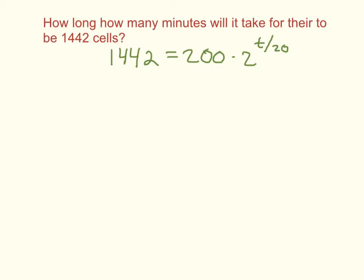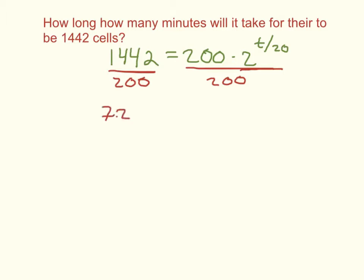Now we have the capability to answer this question without guessing and checking. We need to solve for the exponent containing t. First, I want to isolate the exponential term — I want to get 2 raised to t/20 by itself. To get rid of the 200, I divide both sides by 200. Taking 1,442 divided by 200 gives 7.21, so I have 7.21 equals 2 raised to t over 20.